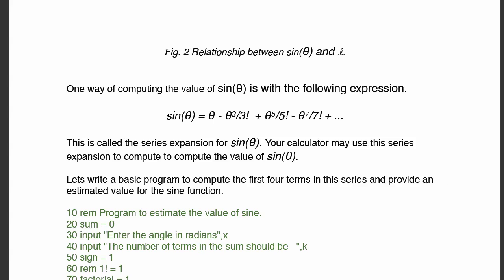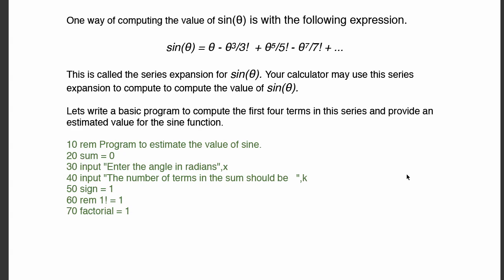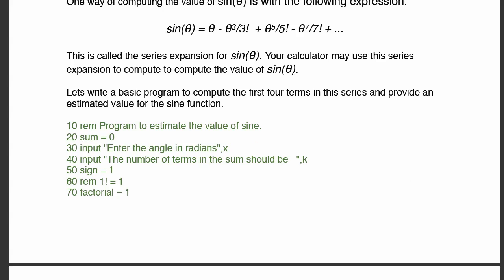Here are the statements in the program. If you're taking basic language programming, enter this series of statements into a basic language program and check it for yourself. The first thing we do is set sum equal to zero — sum is the variable that accumulates the sum of all these terms as we go along. For example, when sum equals theta minus theta cubed divided by 3 factorial, we then add the next term, and so on, continuing to add each successive term.